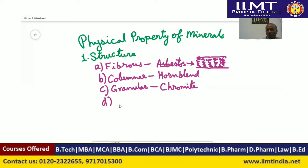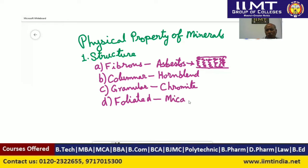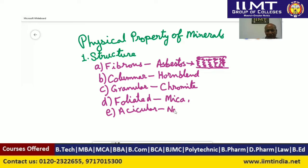Next is foliated structure — minerals with foliated structure can be made into thin separate sheets; mica is the example. Then there is acicular structure (A-C-I-C-U-L-A-R), where the mineral is available in thin, sharp, fine needle form — natrolite is the example. Next is bladed structure — kyanite (K-Y-A-N-I-T-E) has a blade-like structure.